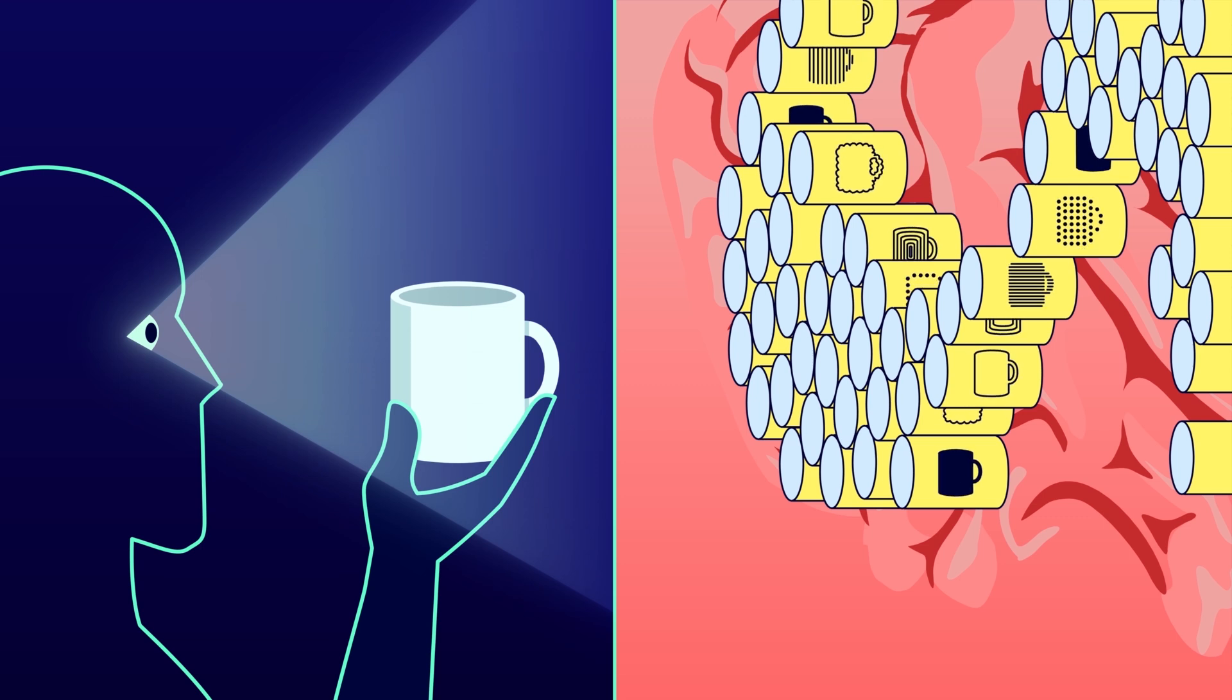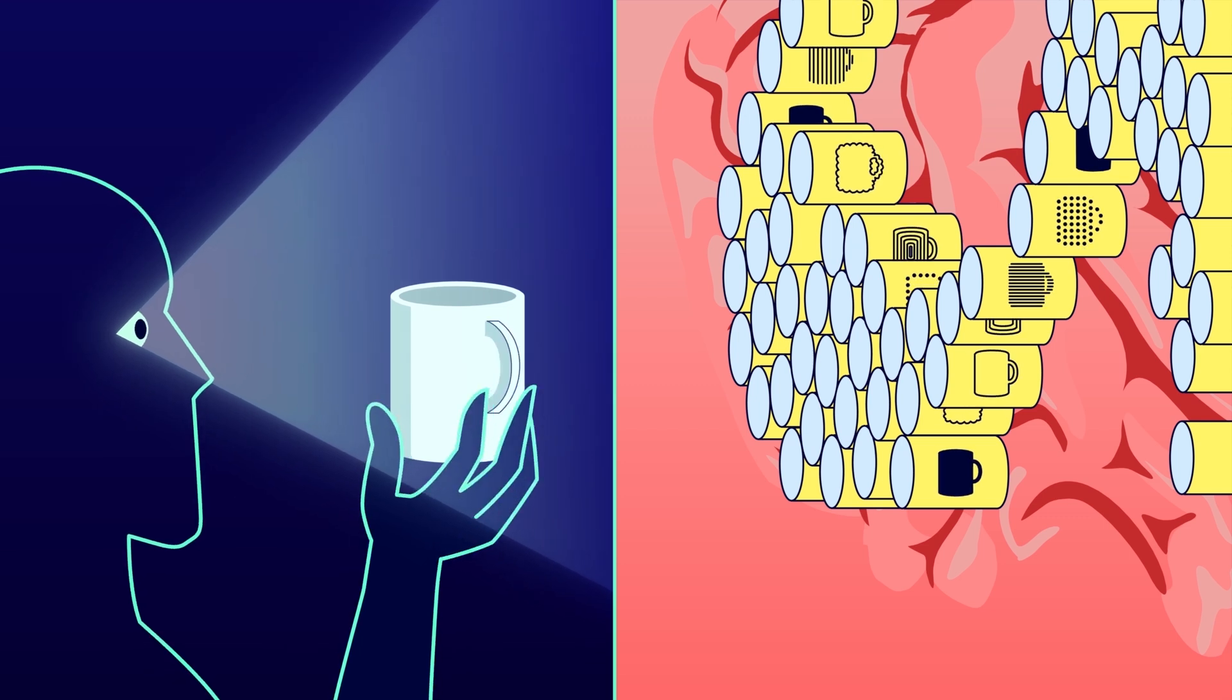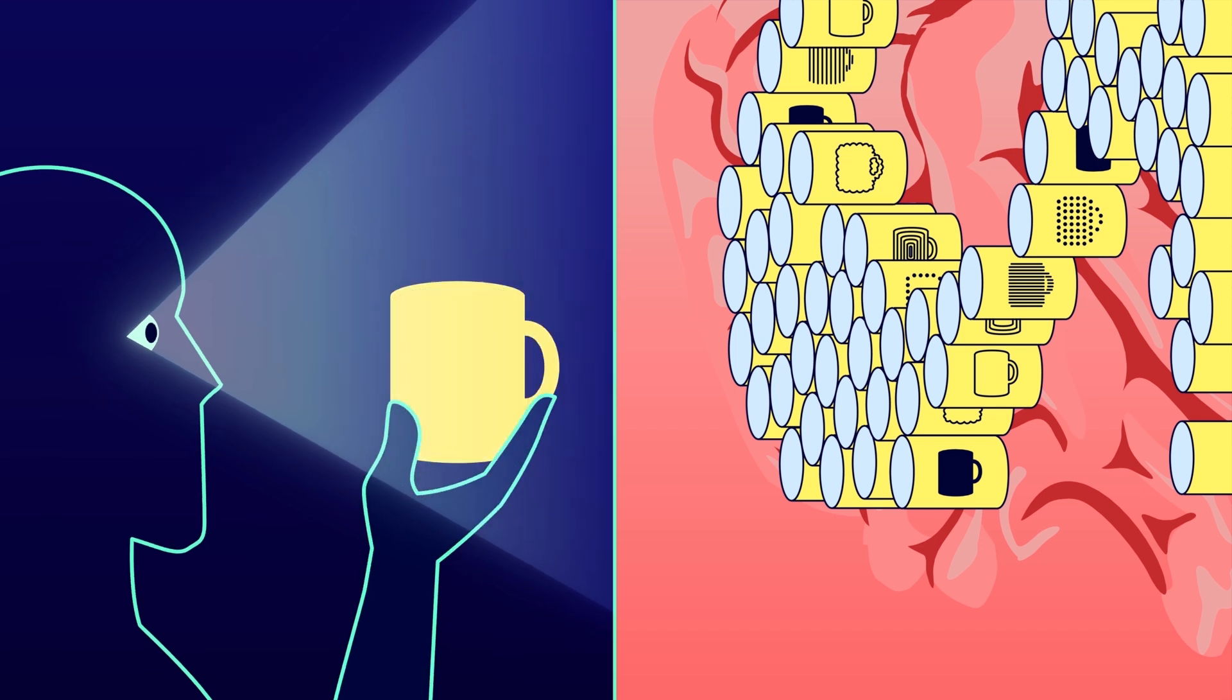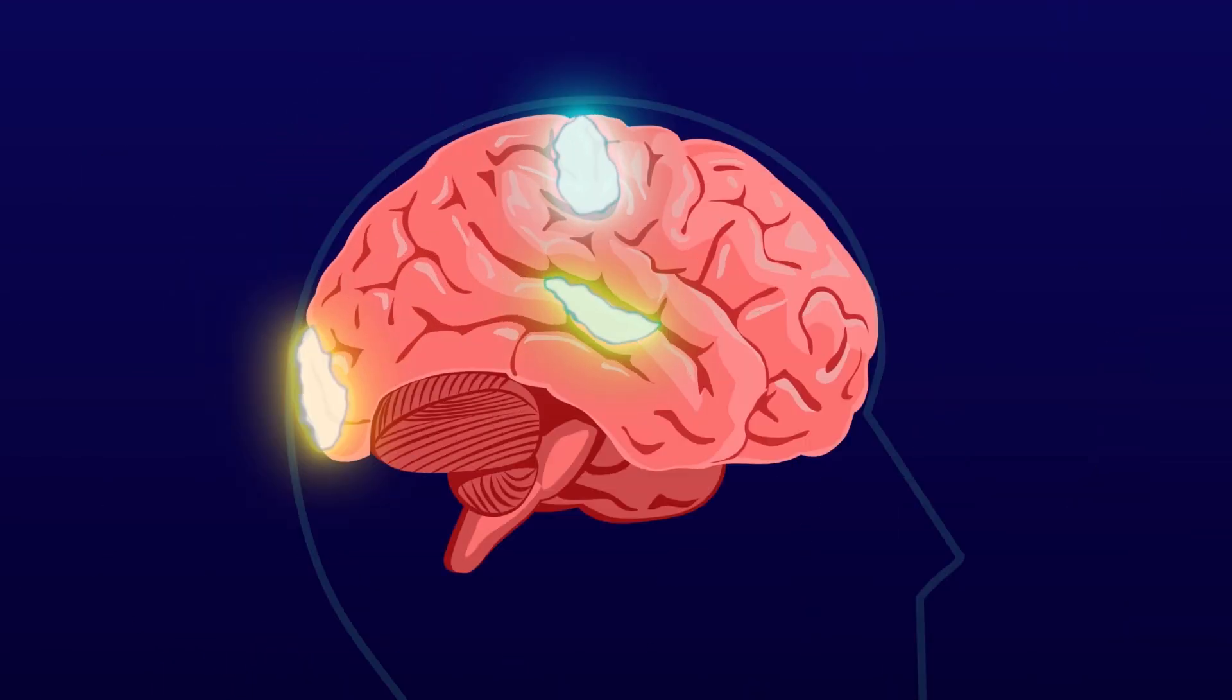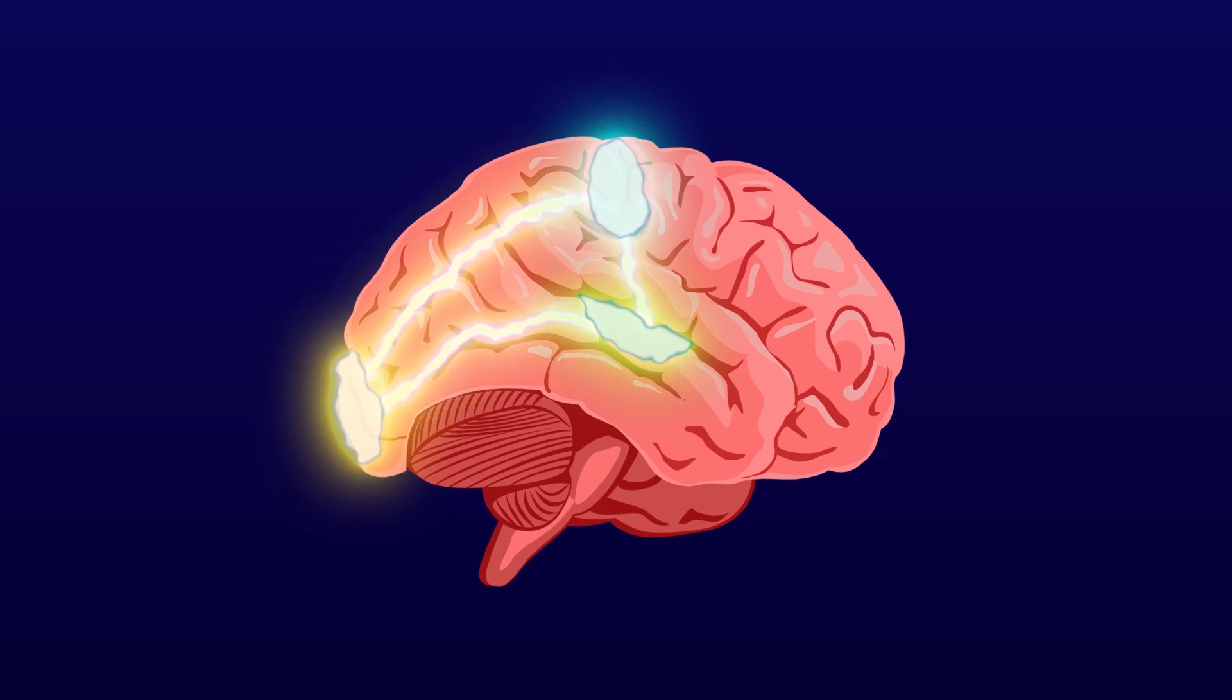But then why does the coffee cup seem like one thing, not thousands of separate things? Some of the cells in the neocortex send signals long distances. They are like wires that go from the left side to the right side, from the front to the back.